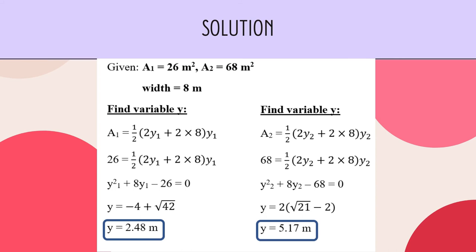This is a quadratic equation, so we use the quadratic formula, giving Y equals negative 4 plus square root of 42, which becomes Y1 equals 2.48 meters. For area 2, the same process: 68 equals ½ times (2Y2 plus 16) times Y2, yielding Y² + 8Y2 minus 68 equals 0. Using the quadratic formula: Y equals 2 times square root of 21, minus 2, giving Y2 equals 5.17 meters.